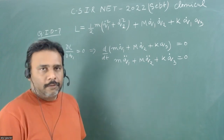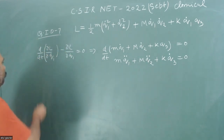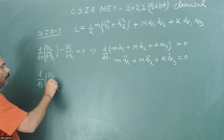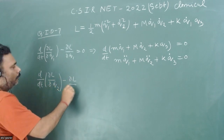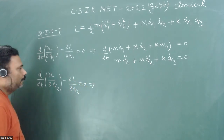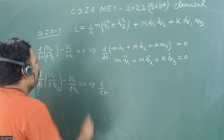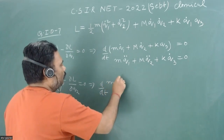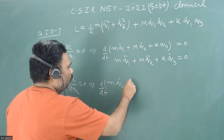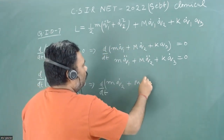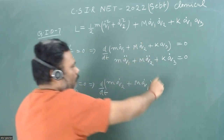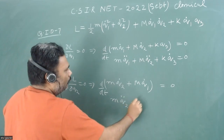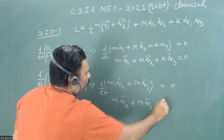Now let's write the equation of motion for Q2. Applying d/dt of (∂L/∂Q2-dot) minus (∂L/∂Q2) equals zero: differentiating with respect to Q2-dot gives M·Q2-dot, and Q1-dot survives giving M·Q1-dot. There is no explicit Q2 term, so that is zero. Therefore: M·Q2-double-dot plus M·Q1-double-dot equals zero.